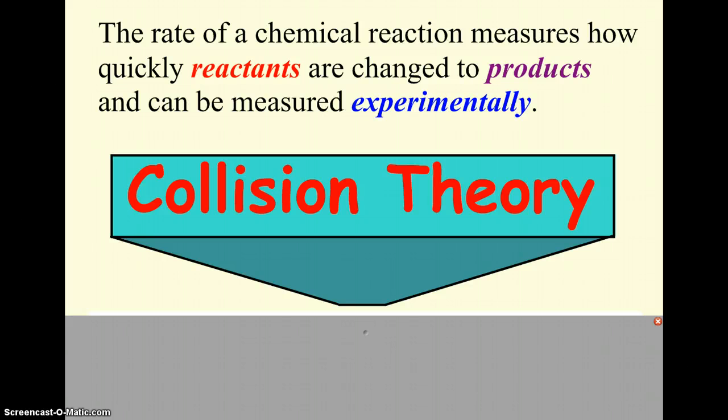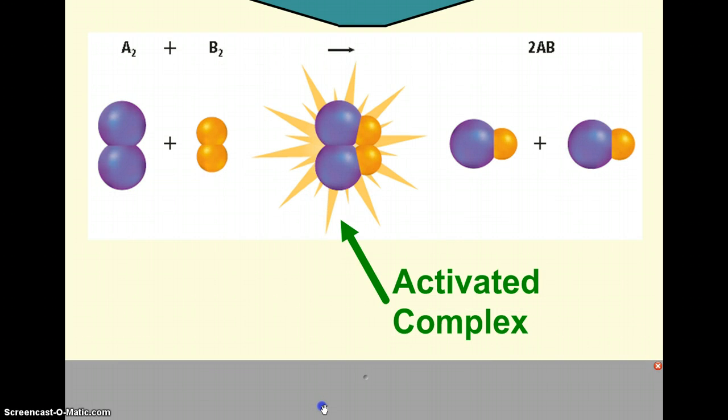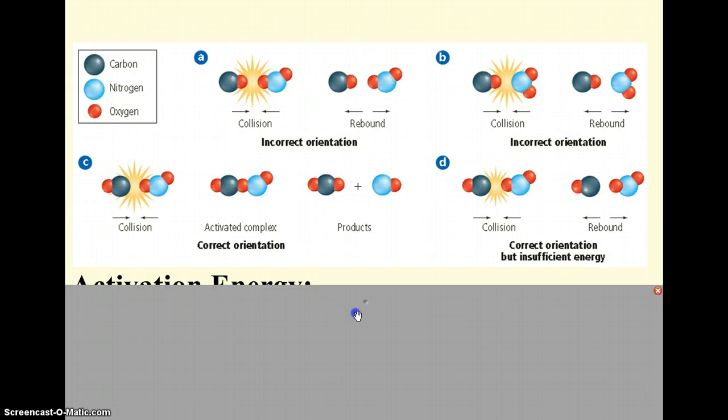It's the collision theory that is pretty much dictating why some reactions are faster than others. In general, the collision theory just says that atoms, ions, or molecules must collide in order to react. If we look at a little visual of that, here we see two reactants, A and B. If they collide properly, they form this activated complex, a short-lived, temporary, unstable arrangement of atoms where old bonds are breaking and new bonds are forming. We have to have proper orientation, as well as enough energy.